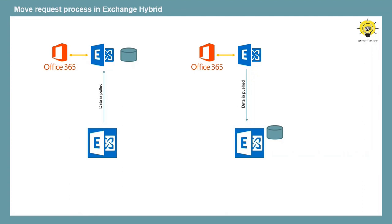When we talked about cut-over migration in a previous video, we discussed that in cut-over migration, a user has two mailboxes at the same time — one actual mailbox in on-premise, and another being provisioned in Exchange Online during cut-over migration. But in Exchange Hybrid, a user has one mailbox during the entire hybrid migration process. The contents of the mailboxes are moved from on-premise Exchange to Exchange Online, or vice versa for off-boarding, but the user will always have only one mailbox.